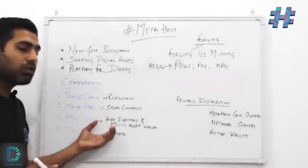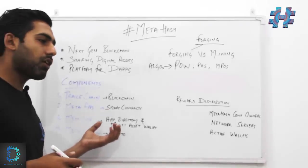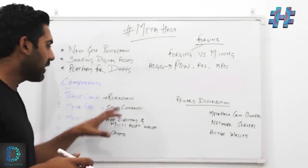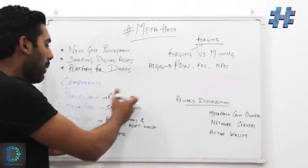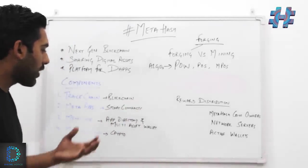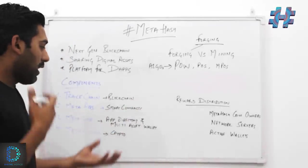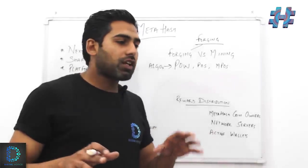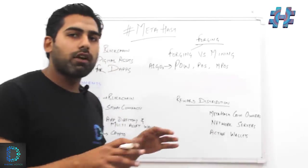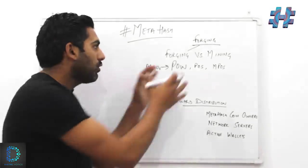I'm not digging deeper into the component section of the project because you can visit their website and get details of each and every component over there—about their blockchain, the smart contracts, the dApp directory, and the cryptocurrency. You can find every information in their white paper and on the website.